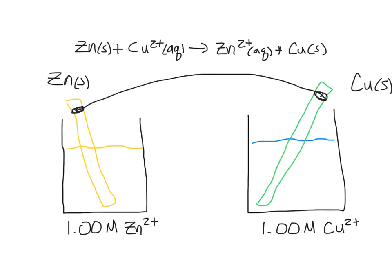In this galvanic cell, we're going to observe the exact same net redox reaction that we did before, but the two half-reactions are going to occur in the separate beakers. So first, let's look at the zinc electrode side.